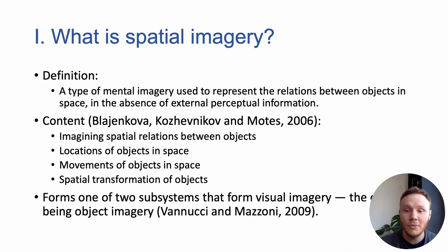Spatial imagery is also understood to form one of two subsystems that form visual mental imagery, the other being object imagery, which involves imagining in detail what certain objects look like in terms of their shape, their colour, their texture and so on.